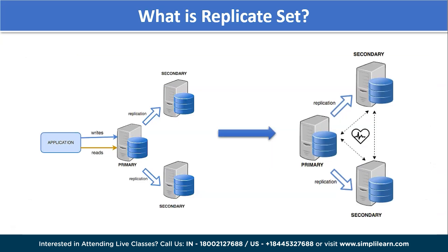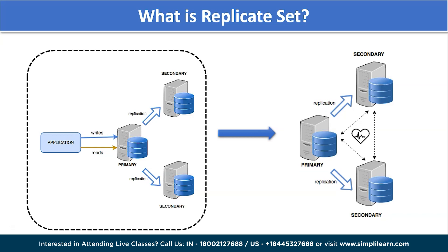The primary node is the member that receives both write and read operations in a replica set, though read operations can also be pointed to secondary nodes by changing configuration. There can be only one primary node at most. The secondary node is where data is replicated to maintain a copy. A replica set can have one or more secondary nodes — clients cannot write data to secondary nodes, they can only read from them.